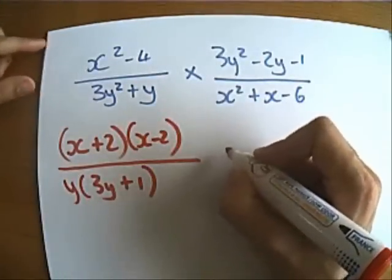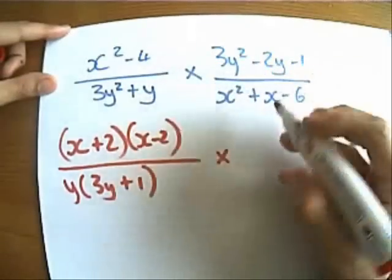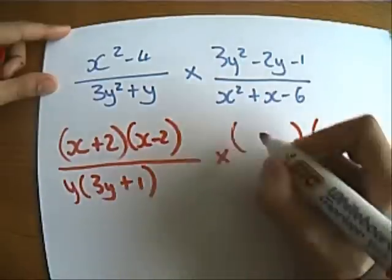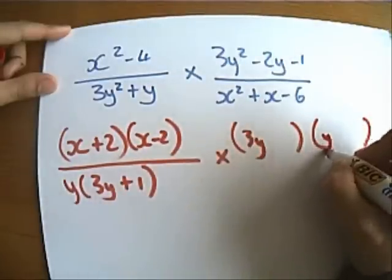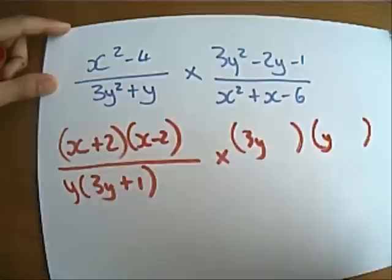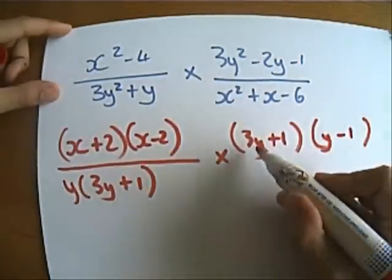OK, well let's see what we get when we factorise over here. Aha, we've got a 3y squared here in this quadratic, so I think we're going to have a 3y and a y, I think we're going to have 3y plus 1 and a y minus 1, let's just check if I've got that right.